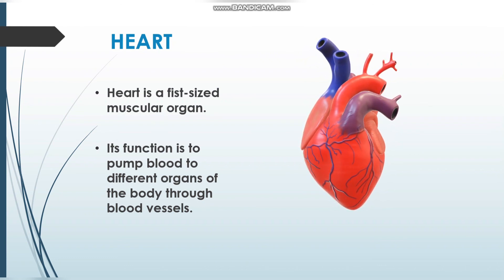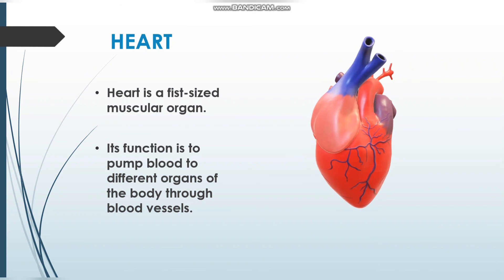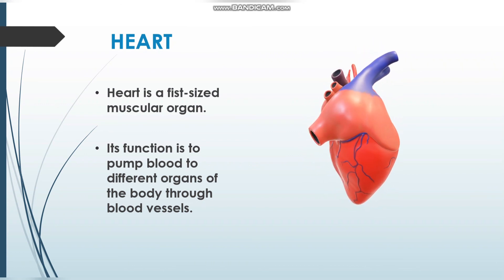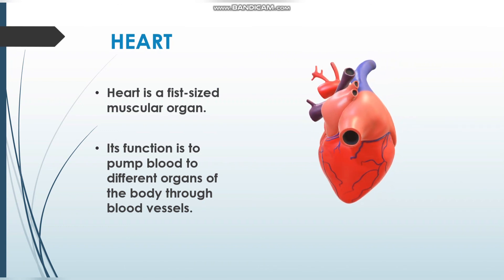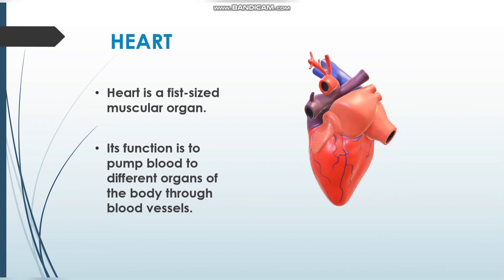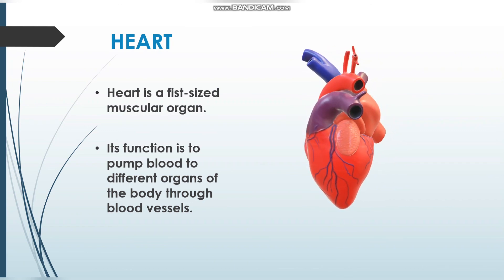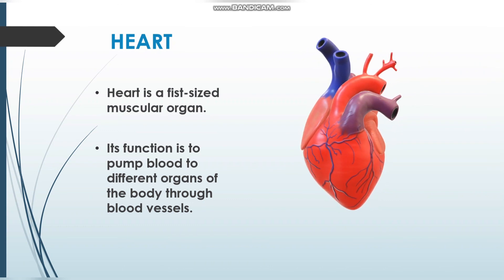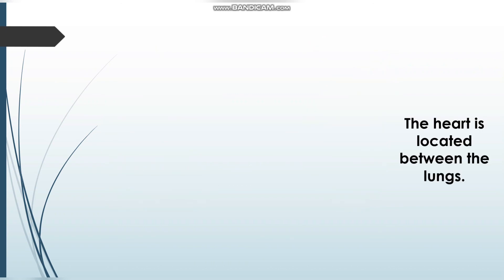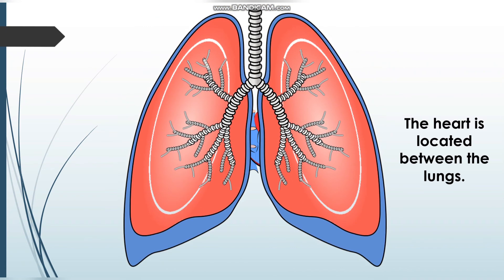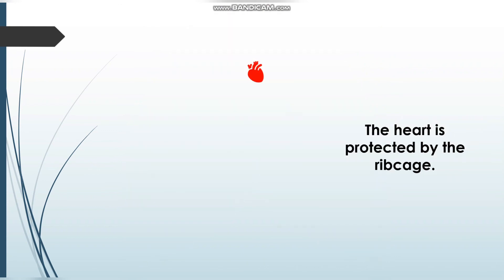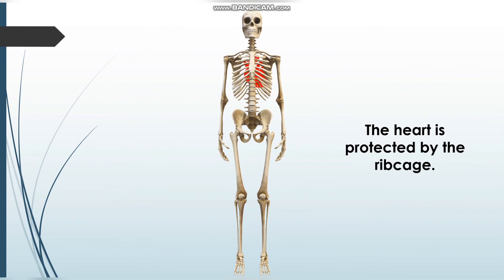The heart is a fist-sized muscular organ. You can just close your fist and guess the size of your heart. Its function is to pump blood to different organs of the body through blood vessels. Blood vessels are connected to the heart. Heart is located between the lungs, and it is protected by the ribcage.